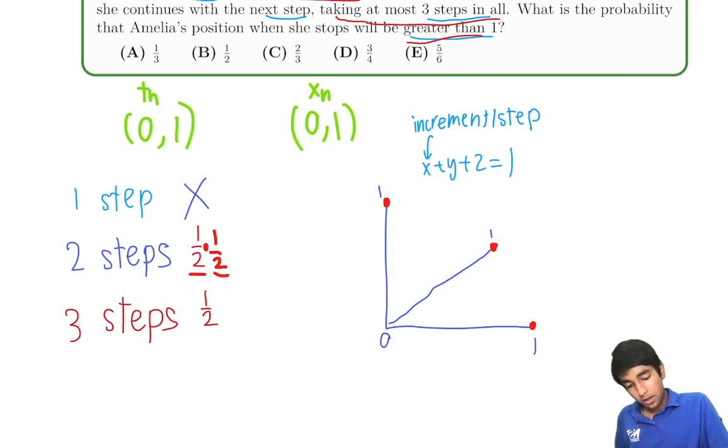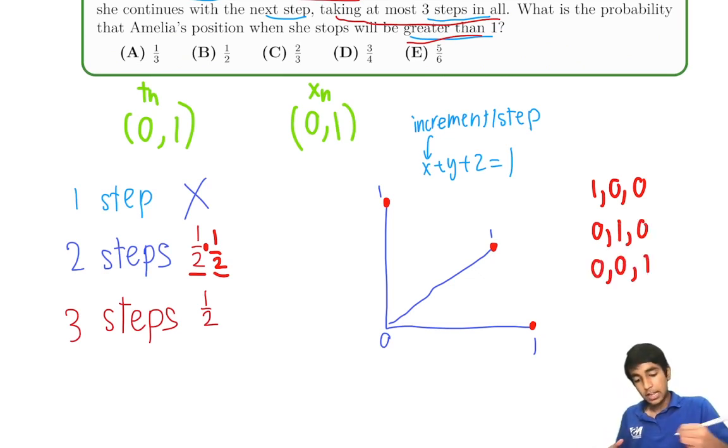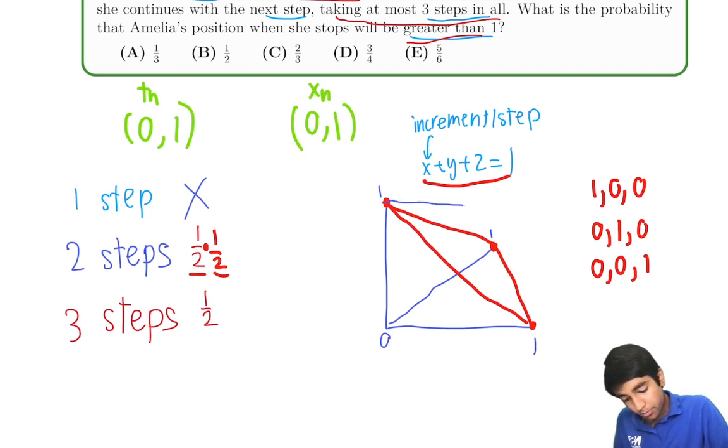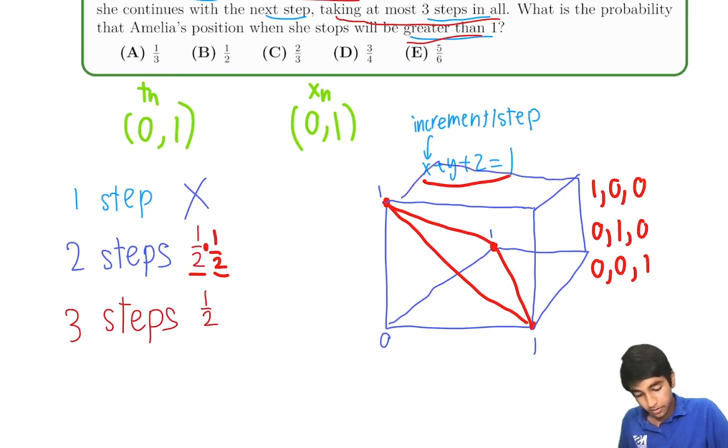So we can see that (1,0,0), (0,1,0), and (0,0,1), basically all these three points, they are all lying on the plane, on this plane. So if we connect them, remember three points define a plane, so this will form a plane. So that essentially means that anything above this red line that I drew, anything above that red line that I just drew, will be a case that has an increment of more than 1 after three steps. So now, instead of finding areas, we're finding volume. So what is the volume of the region above? Let's just draw this to be clear. What is the region of the volume above this plane? Well, to do that, we can find the volume of this pyramidal shape over here.